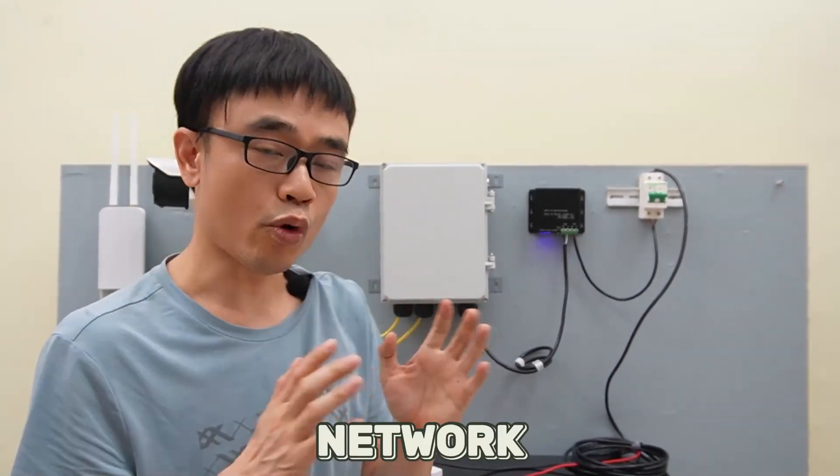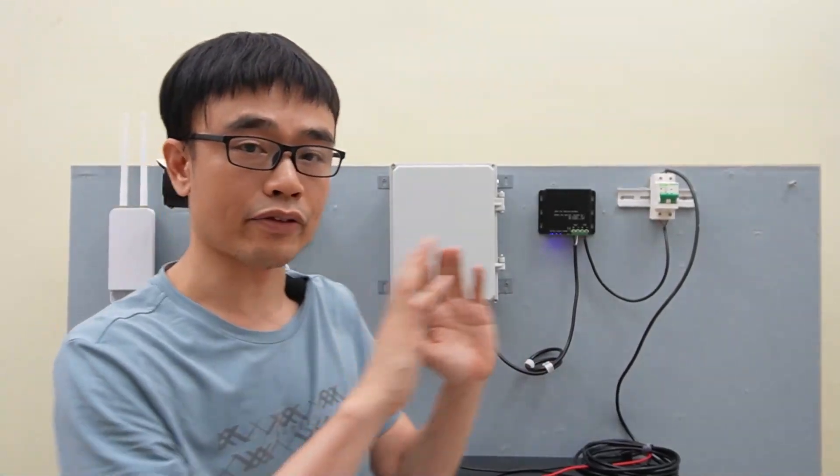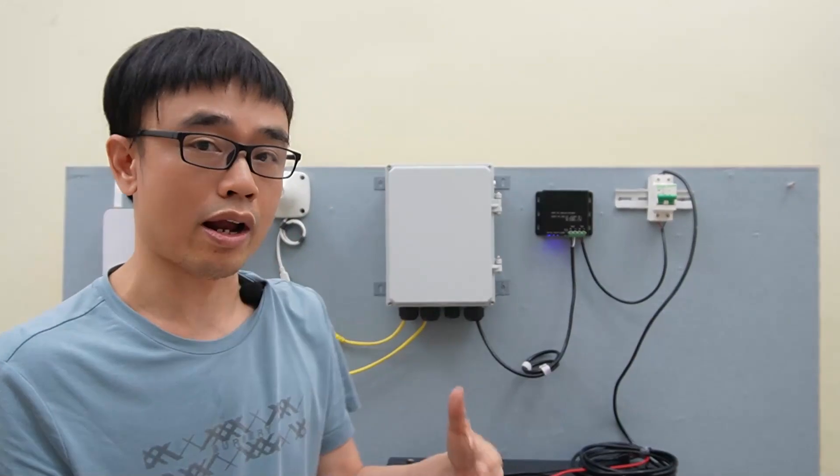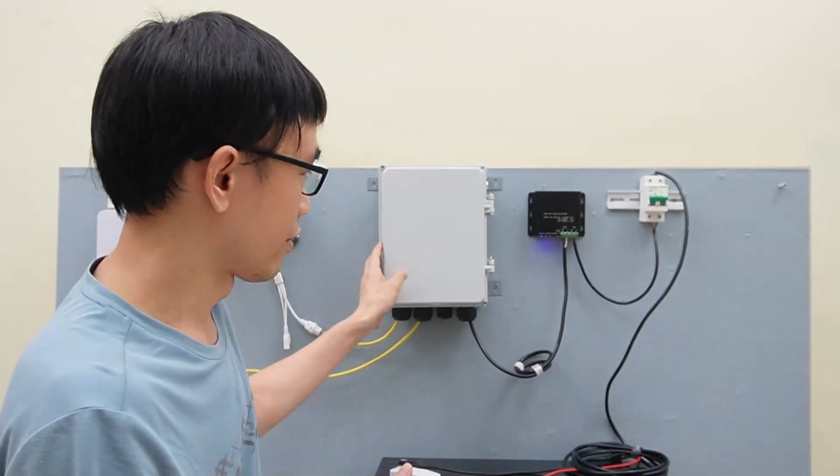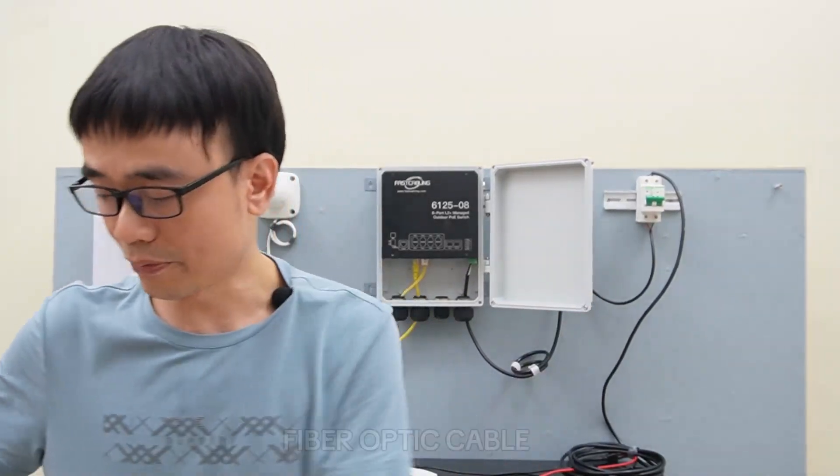We have the power system ready. Just one more thing is the network. We need to send the signal back to the control room, right? We have two options. The first option is we can use wireless bridges. In this case, we are going to use fiber optic cable.